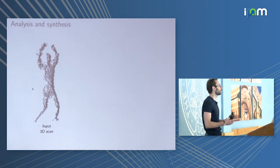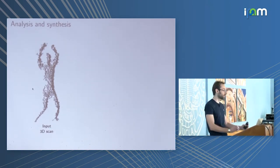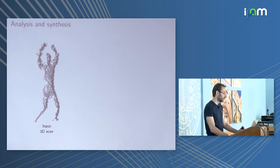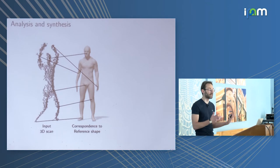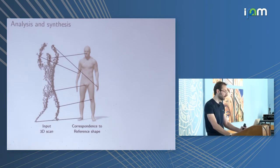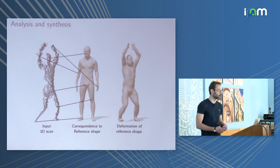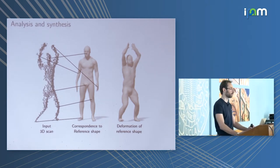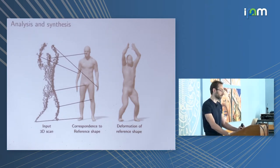This is a nice example of several problems in this domain. We get some noisy, partial, incomplete input that can be represented as an image, point cloud, or mesh. We want to solve two different problems: first, find the correspondence of this noisy input to some reference shape — in this case a canonical human face — and then deform that face to fit it to the input data. I will mostly talk about this first part of correspondence, and hopefully also touch on synthesis — producing new shapes with certain properties.